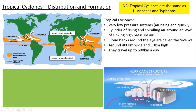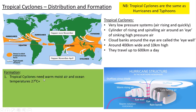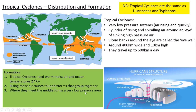Tropical cyclones form very specifically over warm, moist air — over oceans where the temperature is at least 27 degrees Celsius, hence why they really only happen in summer months near the equator. The rising moist air causes thunderstorms that group together, meet and form a very low pressure area. They rotate and move faster and faster, inwards and upwards, creating a huge hurricane overall. The Coriolis force causes those cyclones to essentially deflect, giving them an arced motion — a curvature away — purely because the Earth is spinning underneath them.